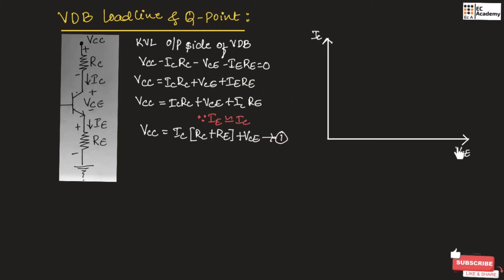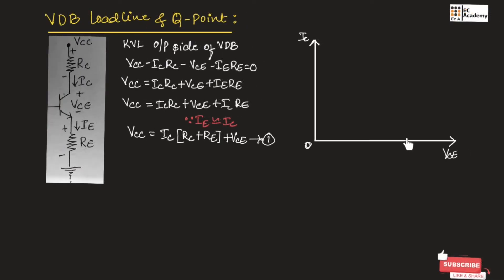We can draw the DC load line by considering the output characteristics of voltage divider bias. To draw the output characteristics, we take VCE on the x-axis and IC on the y-axis. We need to find two points: VCE maximum, which is at the cutoff region, and IC maximum, which is at the saturation region. If we want to find the point on the x-axis, we take IC equal to 0, and if we want to find the point on the y-axis, we take VCE equal to 0 in equation number 1.